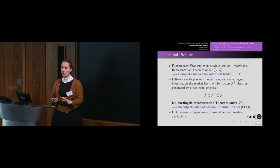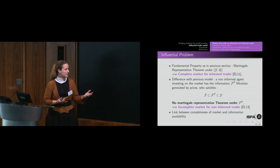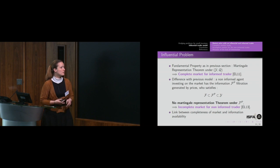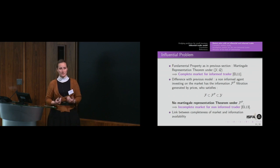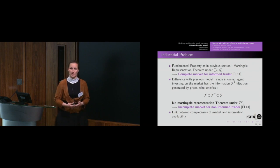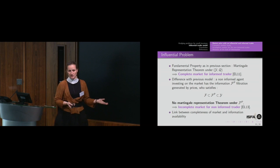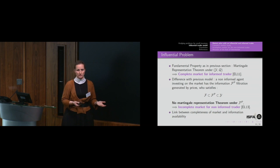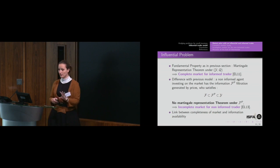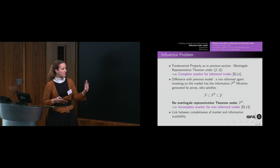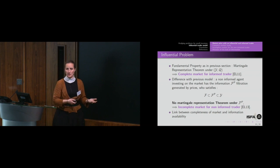We have to deal not with a complete market, but with an incomplete market from the non-informed trader's point of view, as he does not have access to all the information driving the market. Here is the link between market completeness and information availability. We will first present the complete market from the informed trader's point of view, and then study it from the non-informed trader's point of view.